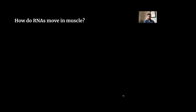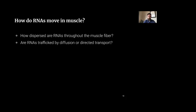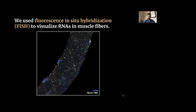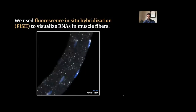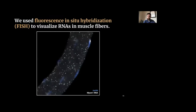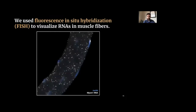We wanted to ask how RNAs move in muscle — specifically, how dispersed RNAs are throughout the muscle fiber and whether that varies between different genes, and whether RNAs move by random diffusion or directed transport. To address this, we used a technique called fluorescence in situ hybridization or FISH, which allows us to visualize individual RNA molecules as bright spots on a microscope. The bright white spots are individual RNA molecules, and nuclei are shown in blue. All images are three-dimensional — I'm showing X and Y while animating through the Z dimension.